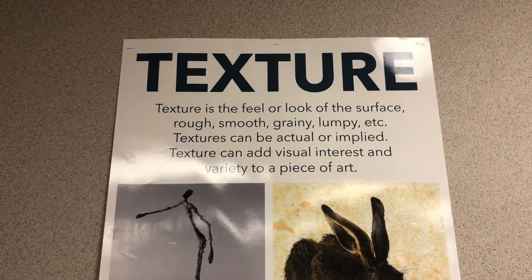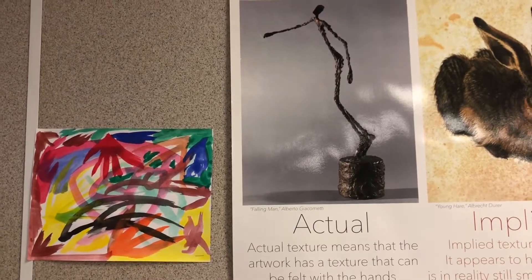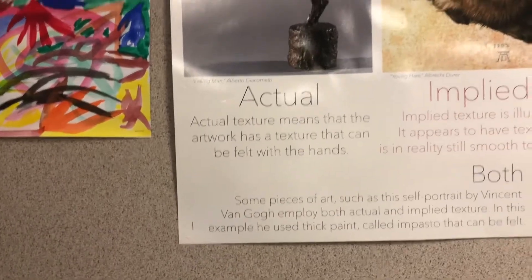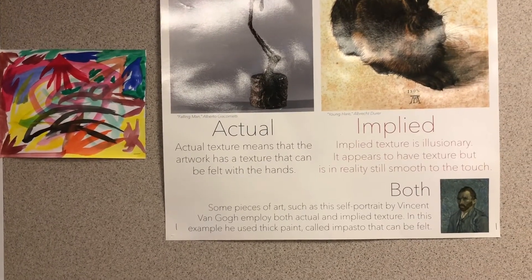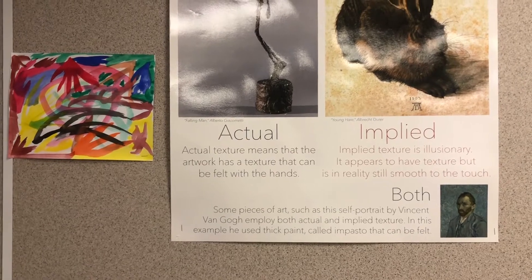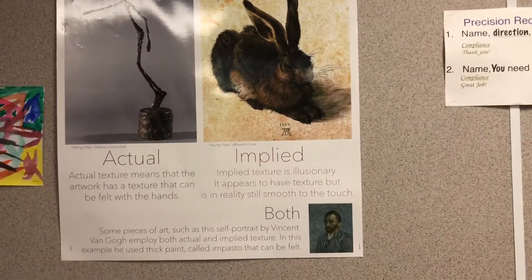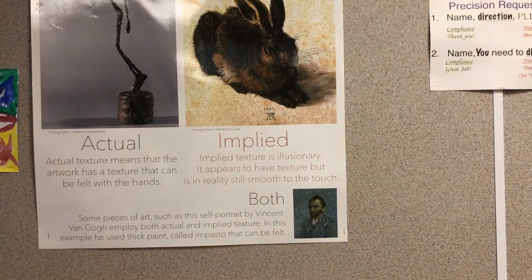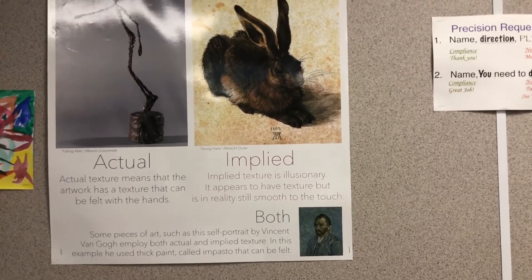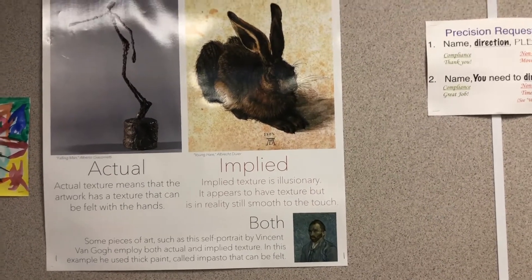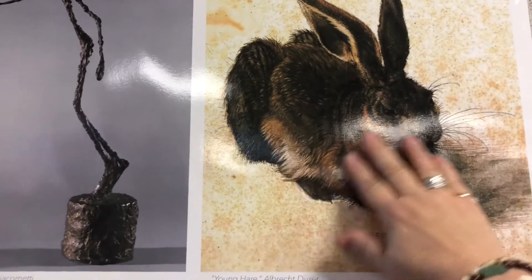Let's take a look at this statue right here. That statue that looks all bumpy and lumpy is actual texture. Actual texture means that the artwork has a texture that can be felt with the hands — you can actually feel that it's bumpy. Now take a look at this rabbit right here. This rabbit is implied texture. It means it's illusionary — it appears to have a texture but in reality it is still smooth to the touch. That rabbit looks fluffy, soft, and furry.